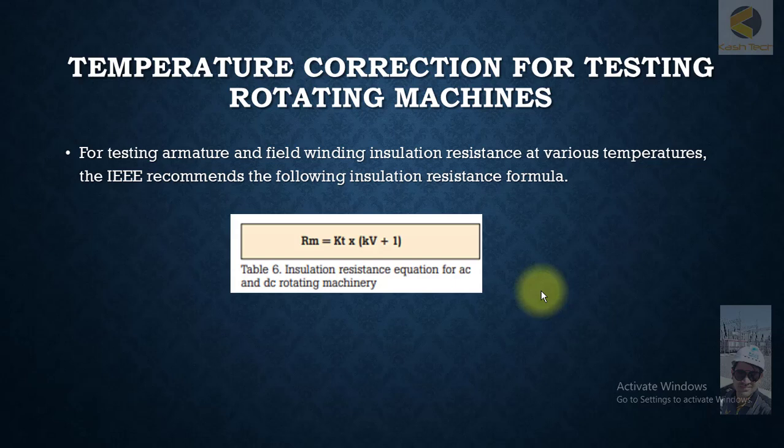You can select other base values, and then we can compare. All the manufacturers are providing the coefficient or correction factor by which you can find out the real resistance. For testing armature and field winding insulation resistance at various temperatures, the IEEE recommends the following insulation resistance formula.